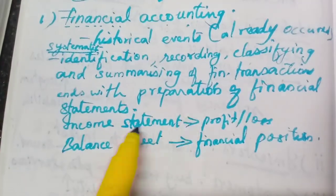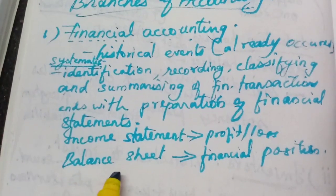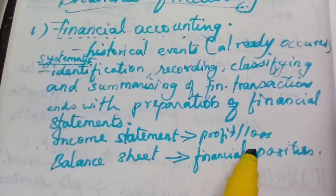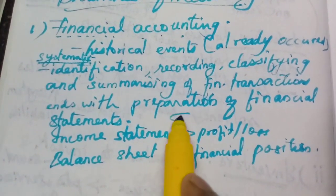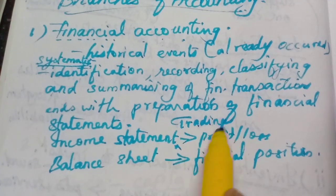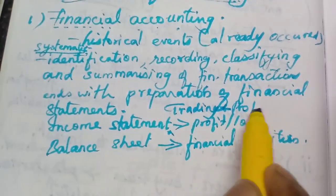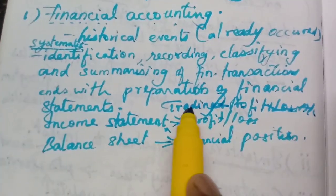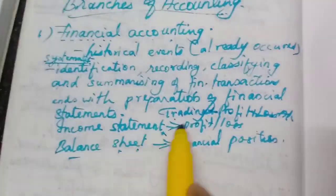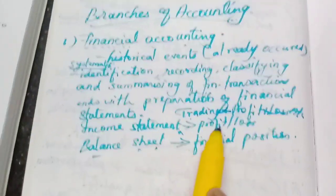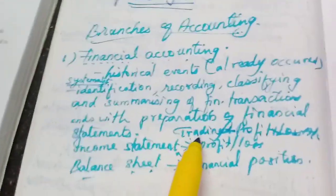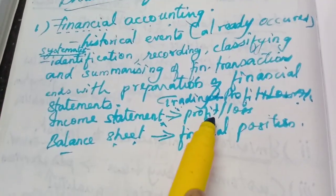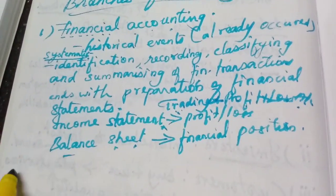The financial statements are the income statement and the balance sheet. The income statement is also called the trading and profit and loss account. From the trading account we get the gross profit, and from the profit and loss account we get the net profit.